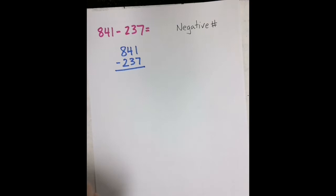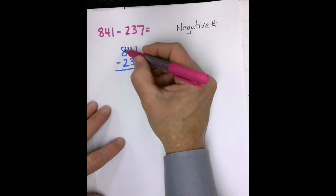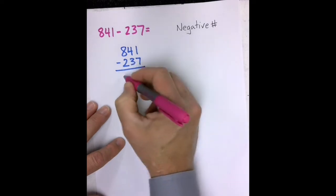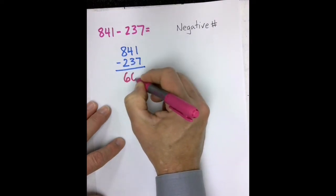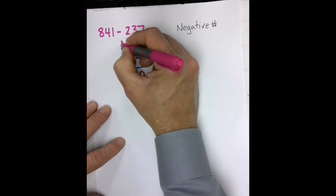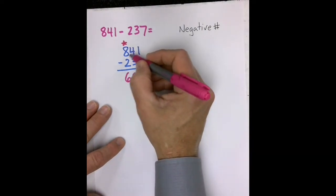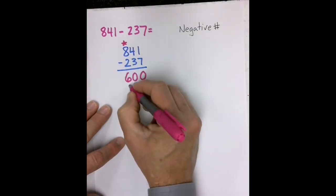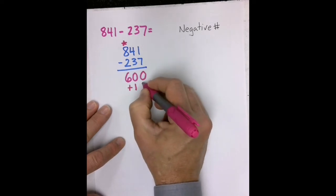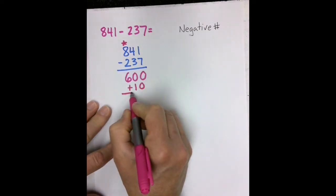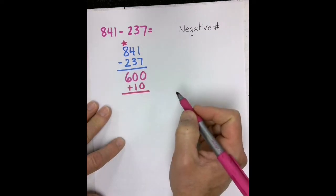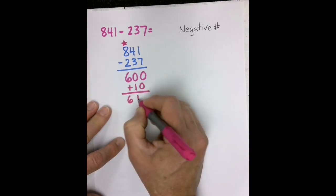The negative number strategy, I will start in the hundreds column. So 800 minus 200 is 600. That's where I start. I go to the next column, and I notice that 40 minus 30 is a positive 10. It's not negative. So I can add my 10 to the 600 that I have for 610.